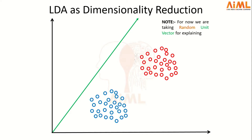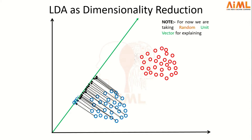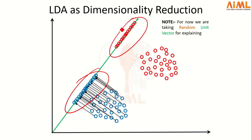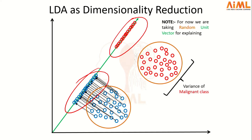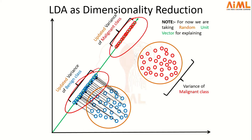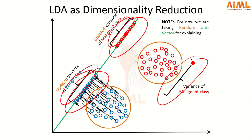Let's take a random unit vector as an example to give a visual effect of the concept. When we start projecting the data points onto this unit vector, these are the projected data points of the benign category and these are the projected data points of the malignant category. You can see that the updated variance of the projected data points is a little bit less compared to the variance of the unprojected data points.